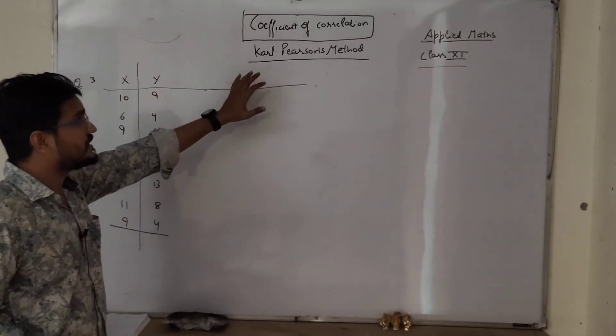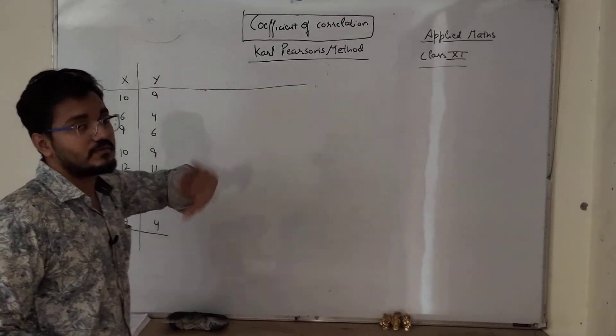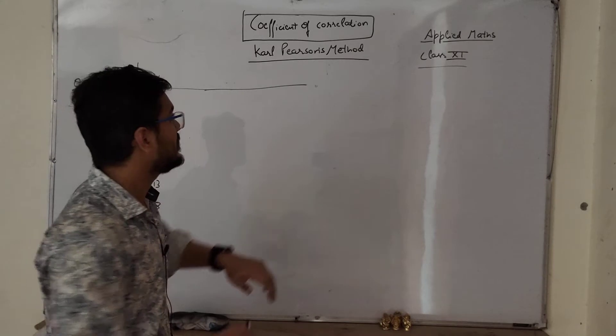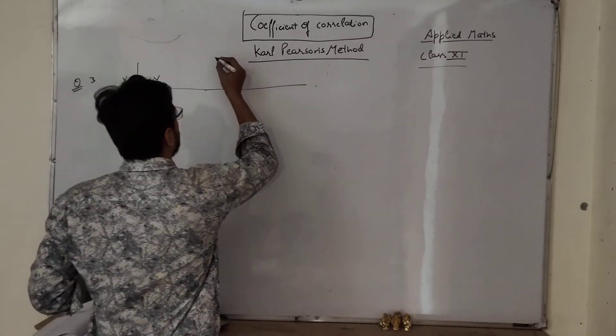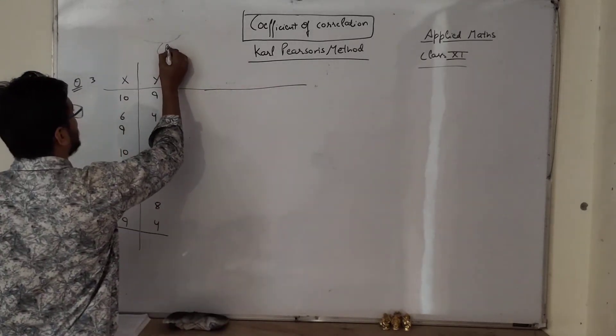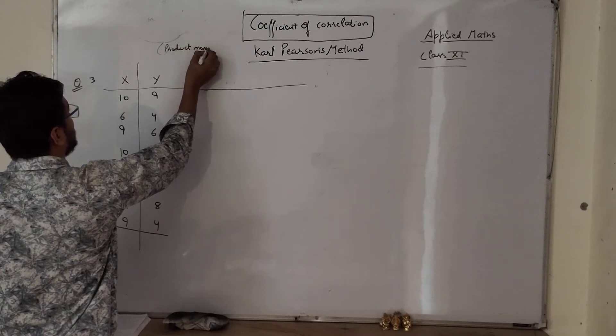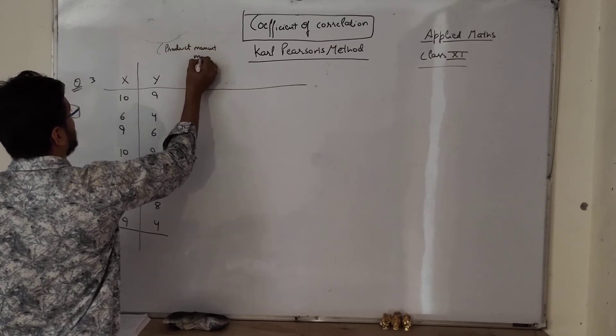So now using Carl Pearson's method we can determine coefficient of correlation. This method is also known as the product moment method.